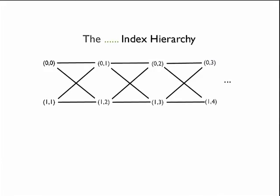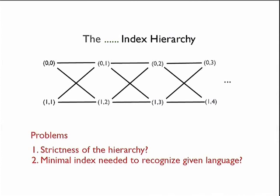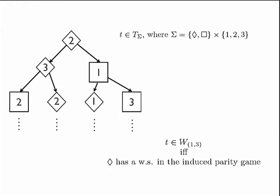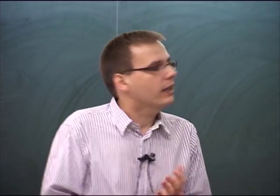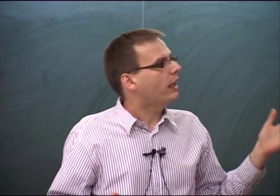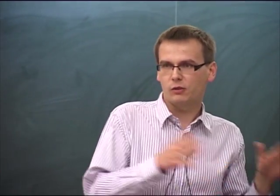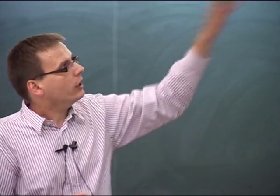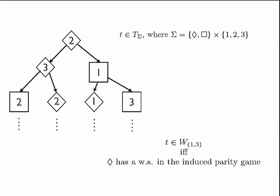Two questions arise: first, whether this hierarchy is strict; and second, what is the minimal index needed to recognize a given language — that's the typical decidability question. For alternating tree automata in general, strictness was answered positively; I believe the first proof is due to Julian Bradfield. There are concrete examples: the language W13 is recognized by a [1,3] automaton but not by a [0,2] automaton. This language is over trees labeled with pairs — each letter is a pair of a Box or Diamond symbol and a number.